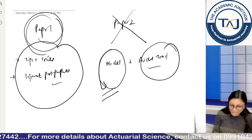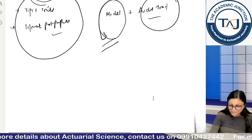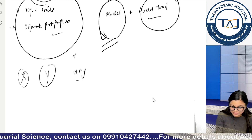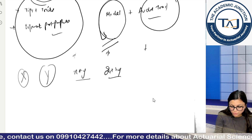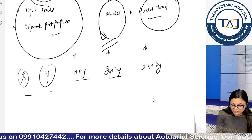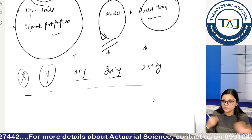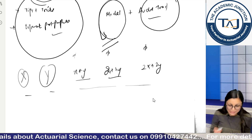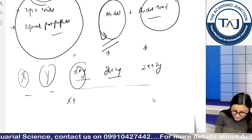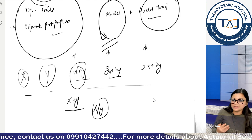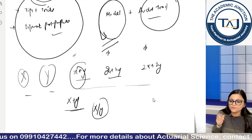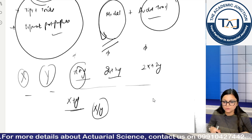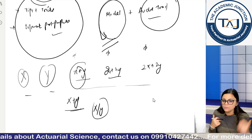Where students actually lose marks is that they waste time understanding whether it should be x into y, or x plus y, or x divided by y — they are not able to understand what sort of calculation is required. This is one of the biggest mistakes: you put all your energy into the model and forget that it is not the model that you are getting marks for. It is the audit trail that you are actually getting marks for.